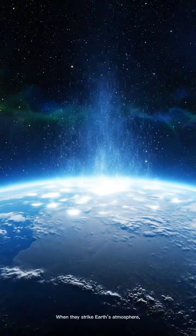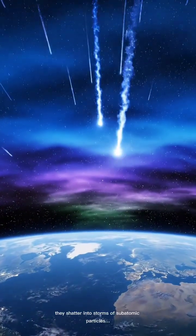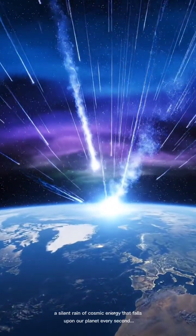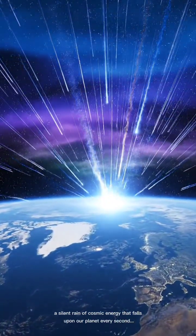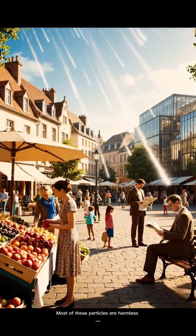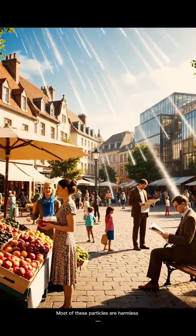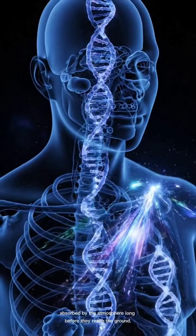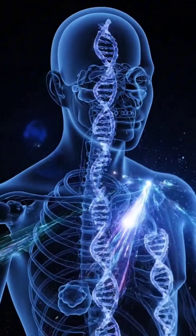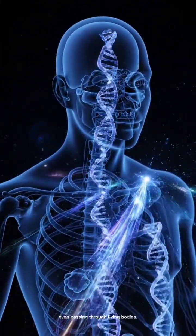When they strike Earth's atmosphere, they shatter into storms of subatomic particles, a silent rain of cosmic energy that falls upon our planet every second. Most of these particles are harmless, absorbed by the atmosphere long before they reach the ground. But some make it all the way down, even passing through living bodies.